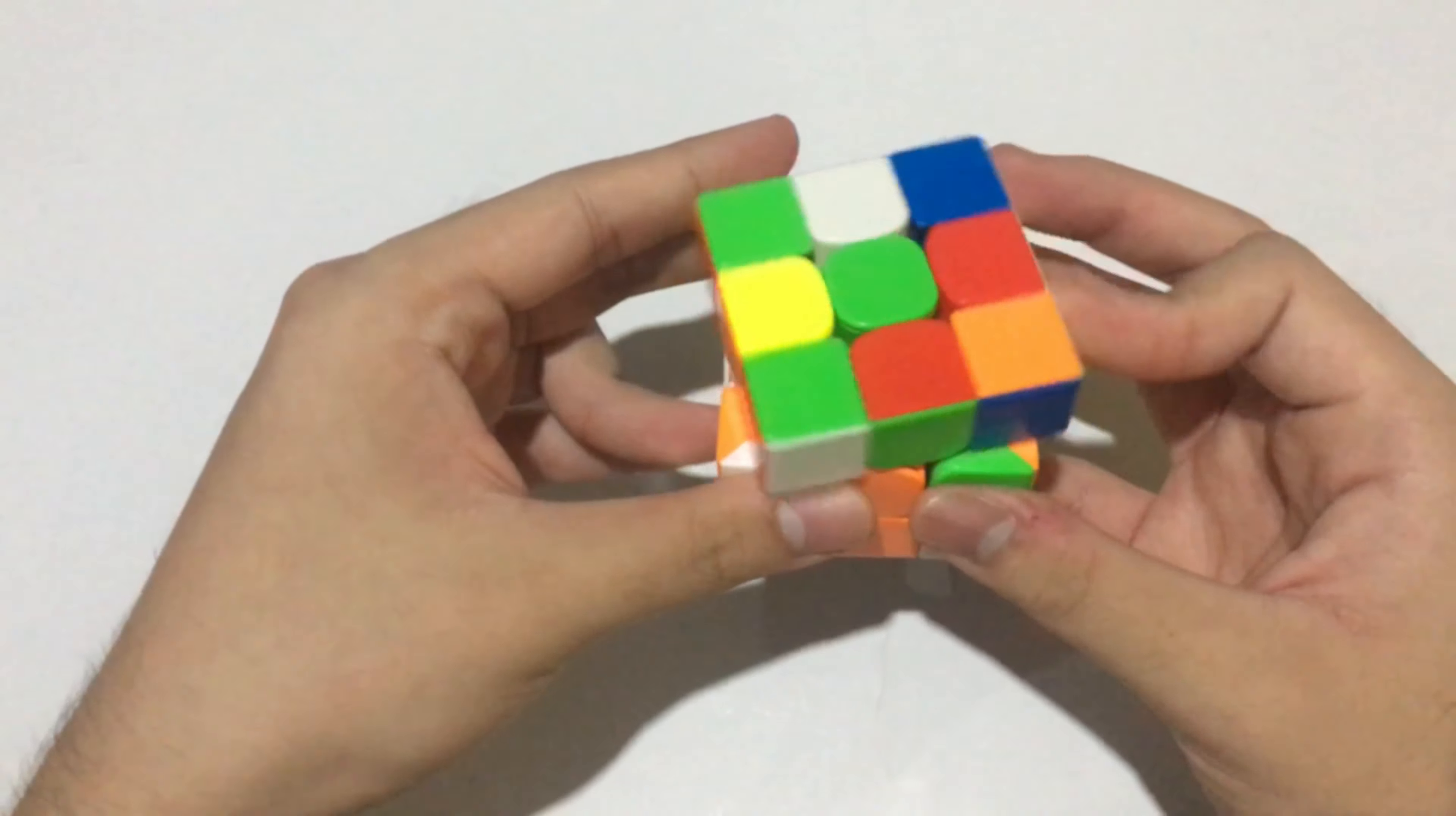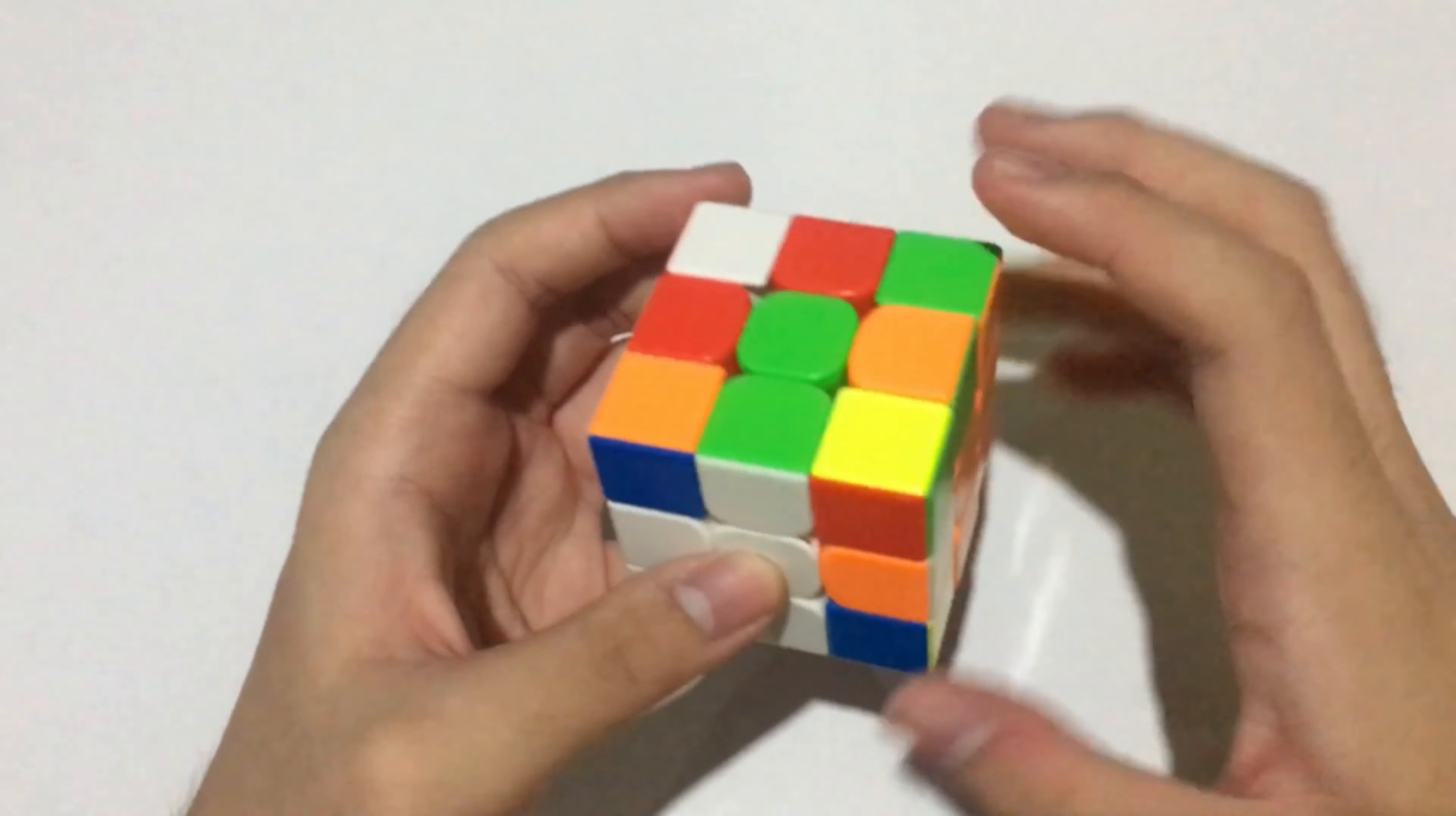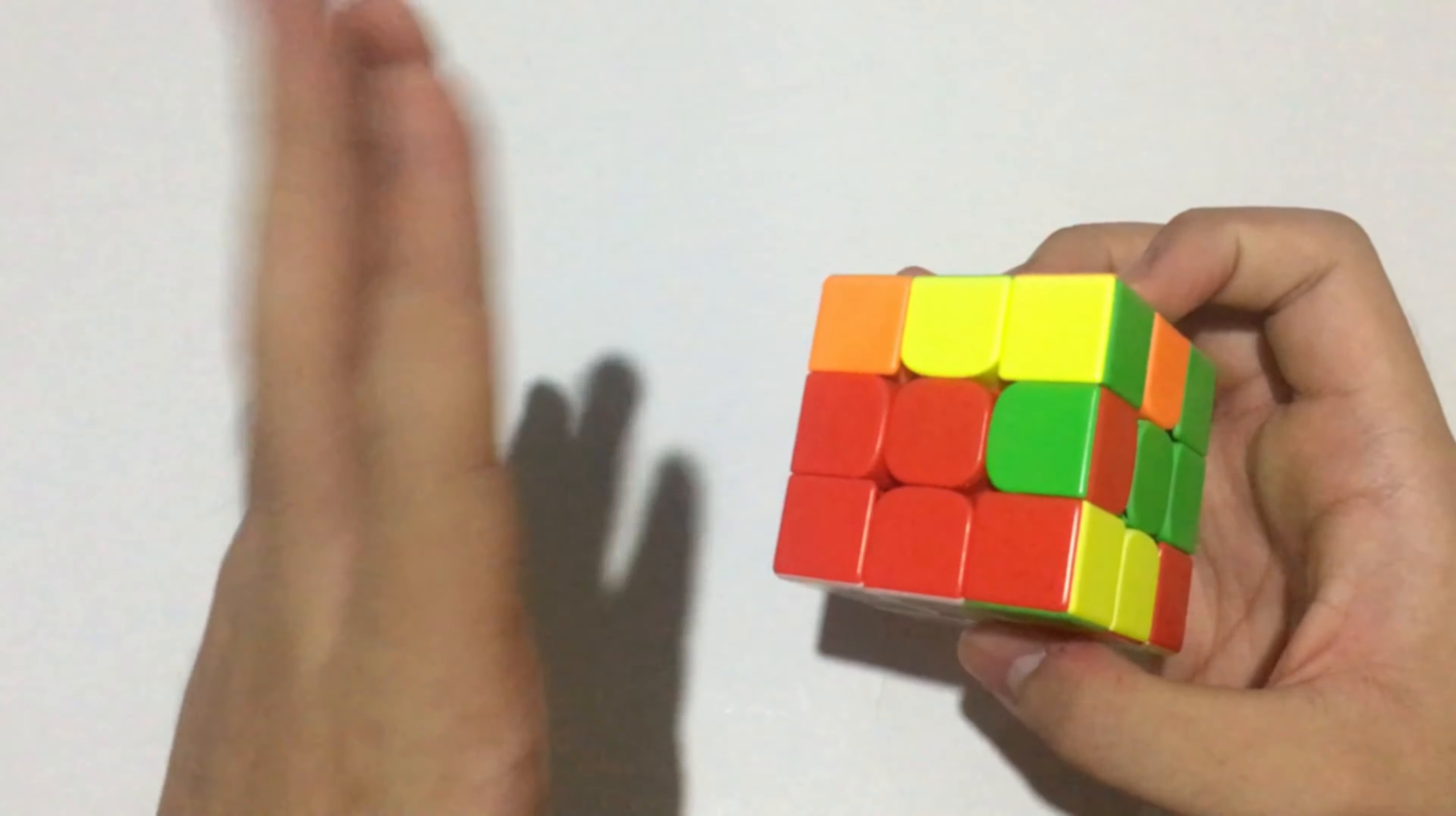I inserted this pair on the back, then I was looking ahead to this terrible F2L case. But that's okay because to maintain the flow, I solved this pair. I paired up this pair using F moves, then inserted. Unfortunately, I have this F2L case and I need to solve it on the back left.